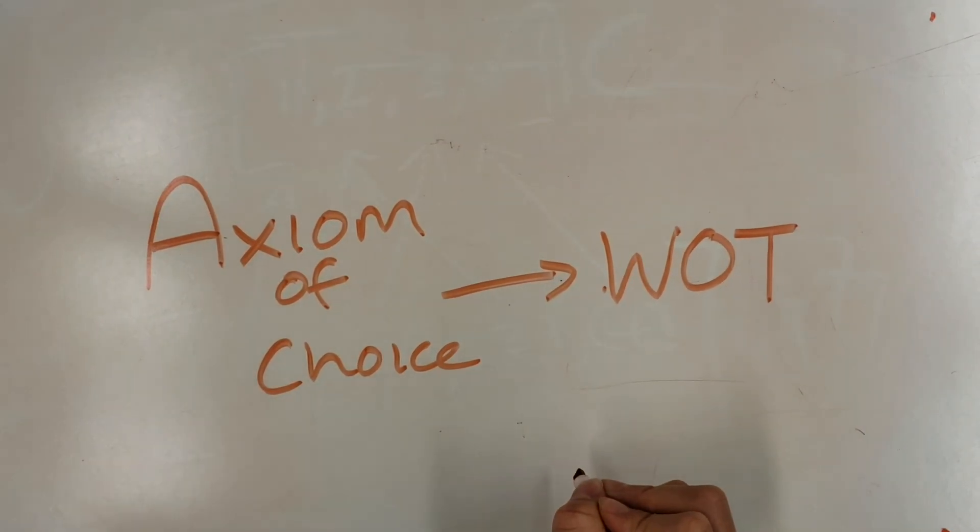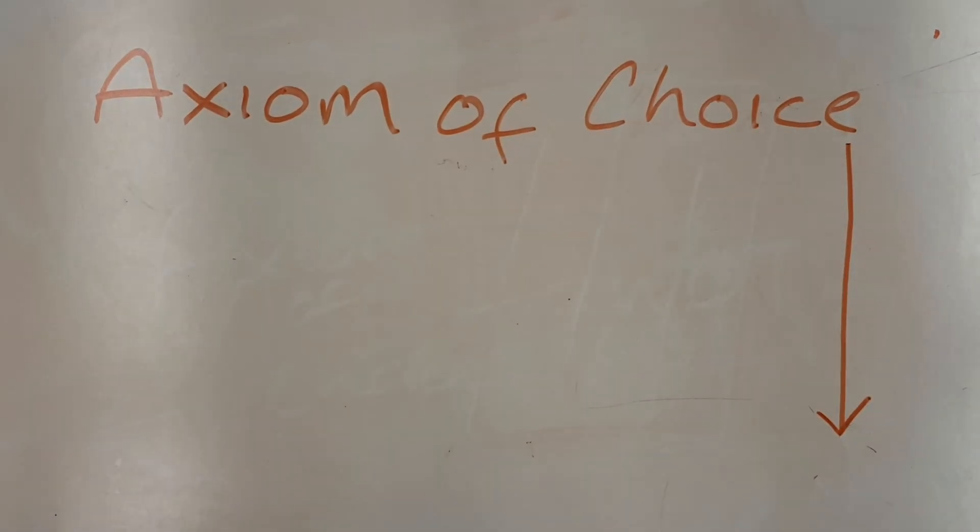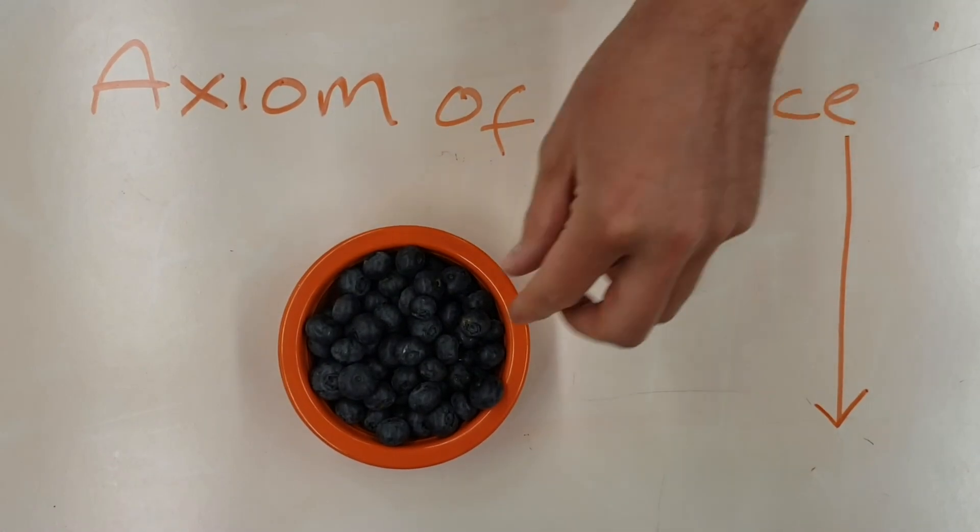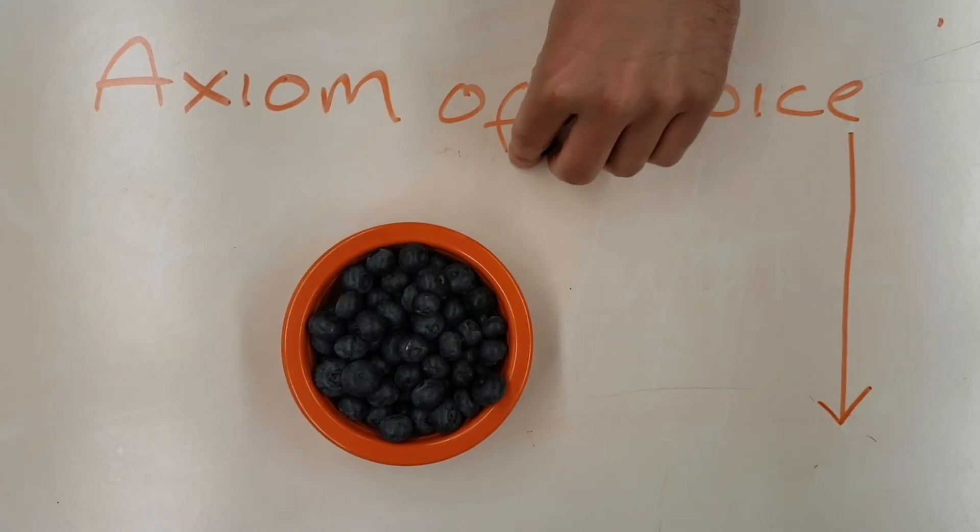If you have a bucket full of blueberries and have the patience to pick one blueberry out at random out of the bucket, as long as there are blueberries left, you may pick out all the blueberries and lay them in a totally ordered row.